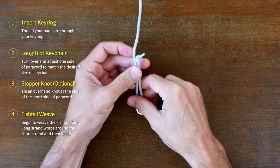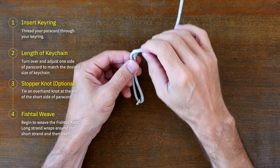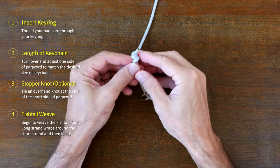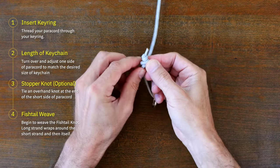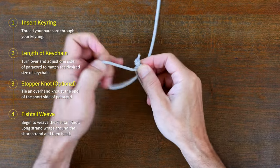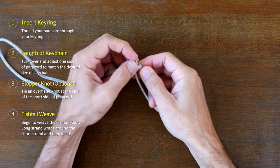From here I'm going to start my fishtail paracord weave by passing the left strand over the right strand and then through the center. I'll then continue the weave by wrapping the left strand around the left side and back through the center again.